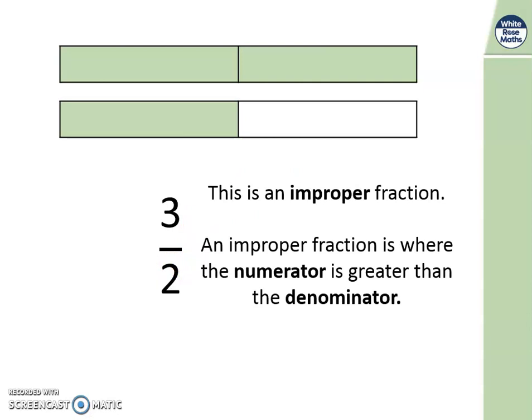This is what we call an improper fraction, if you remember from last week. An improper fraction is where the numerator, here, is greater than the denominator, here.